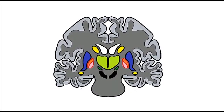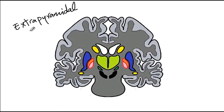The basal ganglia is an important brain structure essential for coordinating movements, and is sometimes referred to as the extrapyramidal nervous system because it is able to modulate the corticospinal nervous system. Here I have a coronal section of the brain, and with the exception of the thalamus shown in green, the rest of the colored structures are part of the basal ganglia.